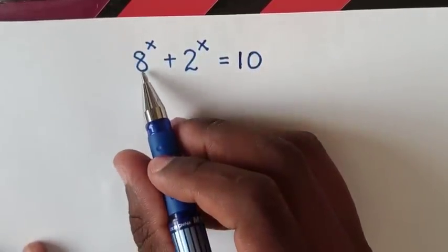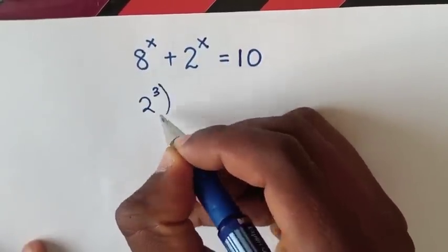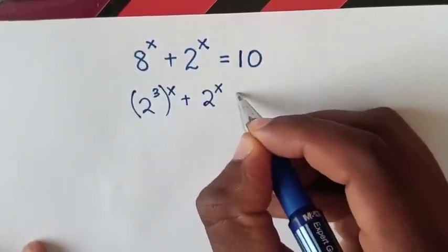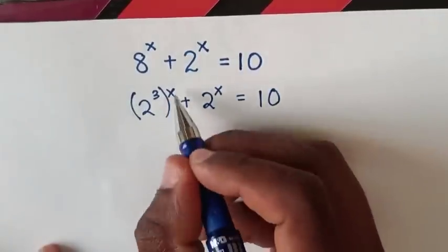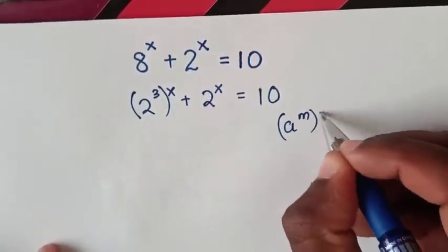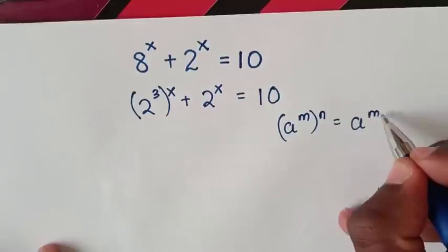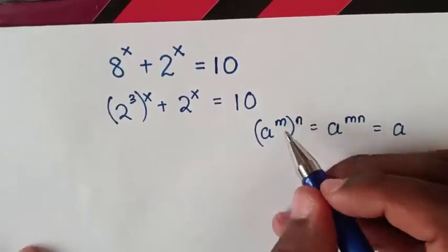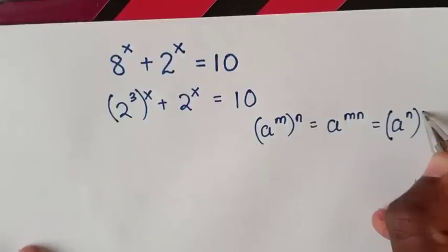First, 8 power x — 8 is the same as 2 power 3, bracket power x, plus 2 power x is equal to 10. We apply the exponential rule: a power m, bracket power n, is equal to a power mn. We exchange the powers inside the bracket, so it will be power n bracket power m.